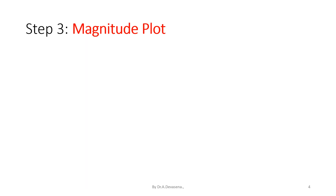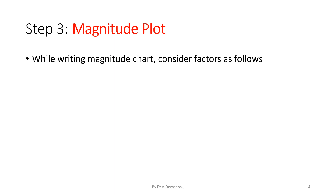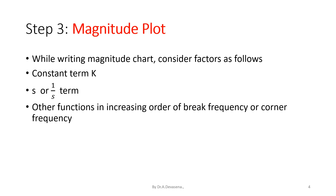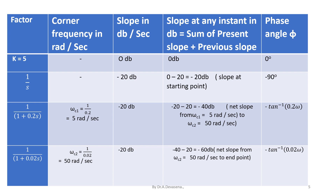Magnitude plot. While writing the magnitude chart, consider the factors as follows: the constant term k, the s or 1/s term, and other functions in increasing order of break frequency or corner frequency. For this problem we have 4 factors: k = 5, the 1/s factor, the 1/(1 + 0.2s) factor, and the 1/(1 + 0.02s) factor.